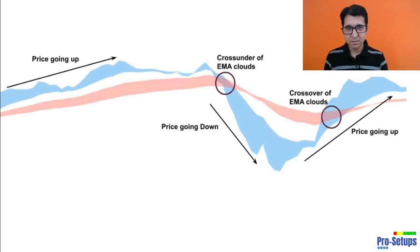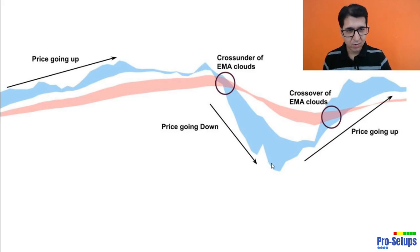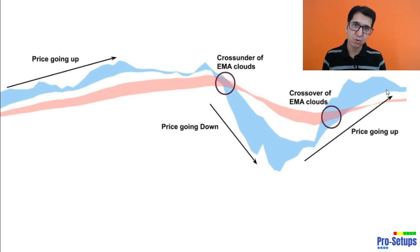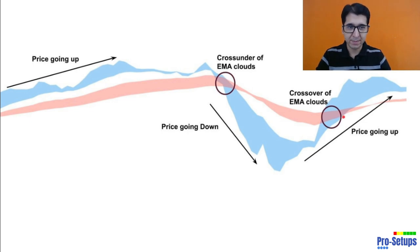I have removed the candles here because I want to show you only the EMA clouds. When the price is going up you will see that the blue clouds go up faster than the red cloud, and when the price goes down the blue cloud is the first to come down quickly. On a chart you will observe that the blue EMA cloud crosses over and crosses under the red EMA clouds multiple times. Here the blue EMA cloud is crossing under the red EMA clouds, and over here the blue EMA cloud is crossing over the red EMA clouds.